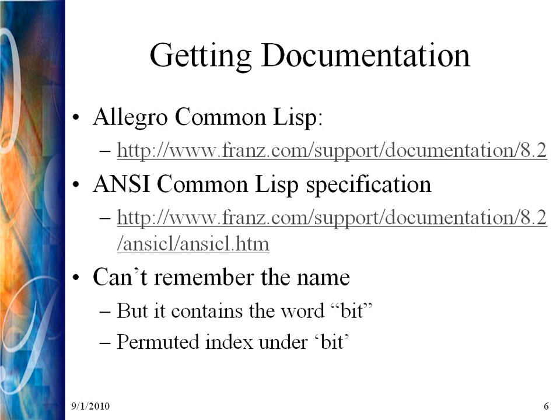You can replace 8.2 with 'current' — C-U-R-R-E-N-T — and that URL works even when we change the version number. We also have a couple of indexes, including the permuted index, which I will demonstrate. If you think you know a word in a topic but it may not be the first word, you can look it up in the permuted index, which indexes all words in link names.